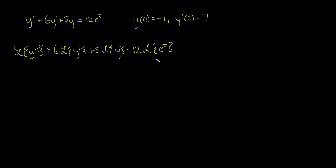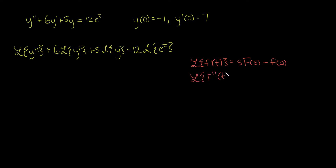Now we know, because of our formulas for what the Laplace transforms of derivatives are, we can say: the Laplace transform of a function's first derivative y prime of t is s times that function's Laplace transform F(s) minus that function evaluated at 0. And the Laplace transform of a function's second derivative is equal to s squared times F(s), minus s times f evaluated at 0, minus f prime evaluated at 0. So useful for solving differential equations, because it incorporates initial values into the transform itself.